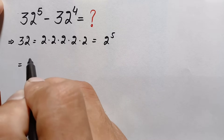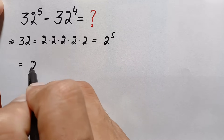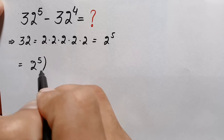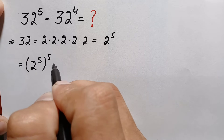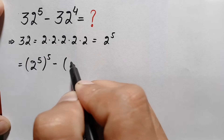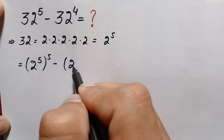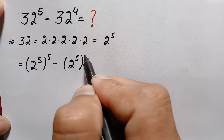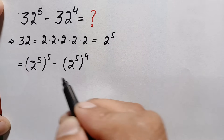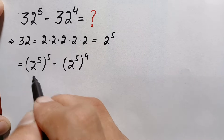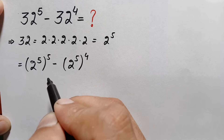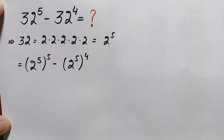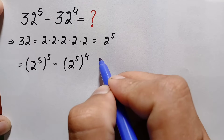So the expression becomes: (2 raised to power 5) whole raised to power 5, minus (2 raised to power 5) whole raised to power 4. In both terms we will use an exponential identity to multiply the powers with each other.